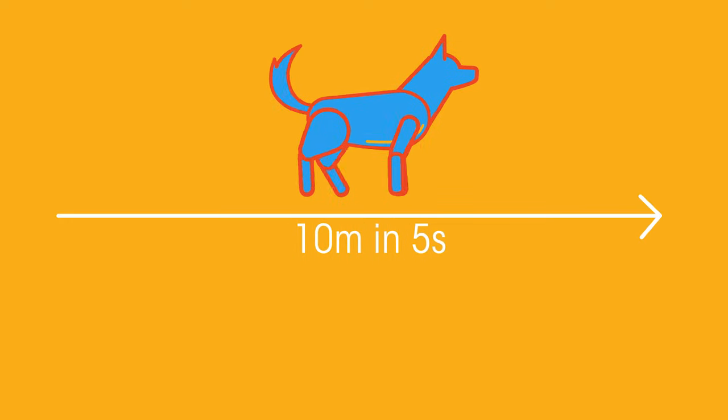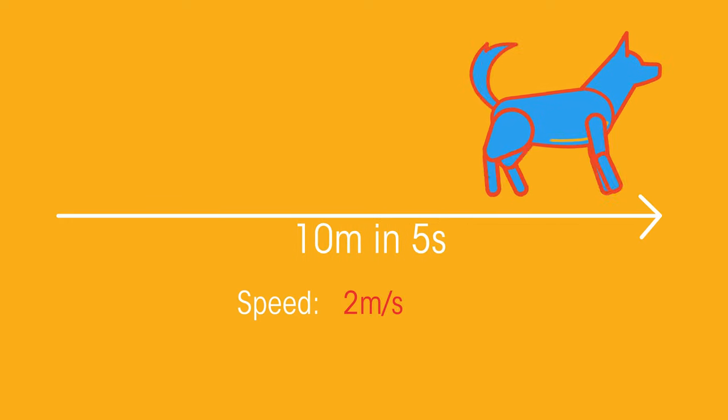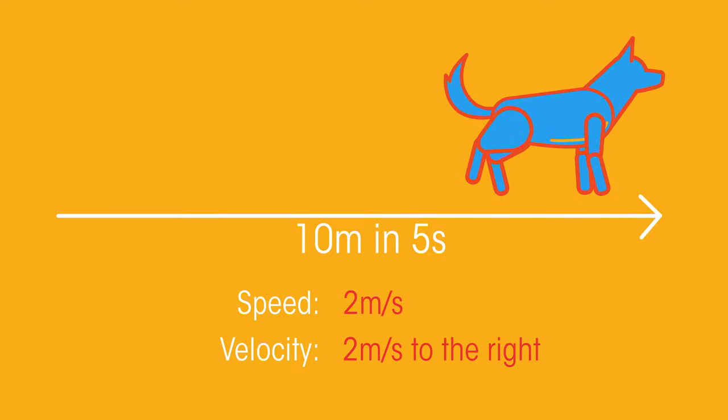For example, a dog travelling 10 metres in 5 seconds has a speed of 2 metres per second, but a velocity of 2 metres to the right.